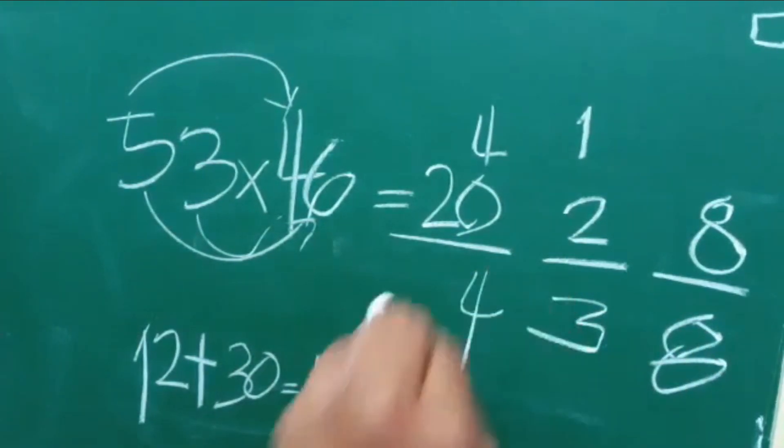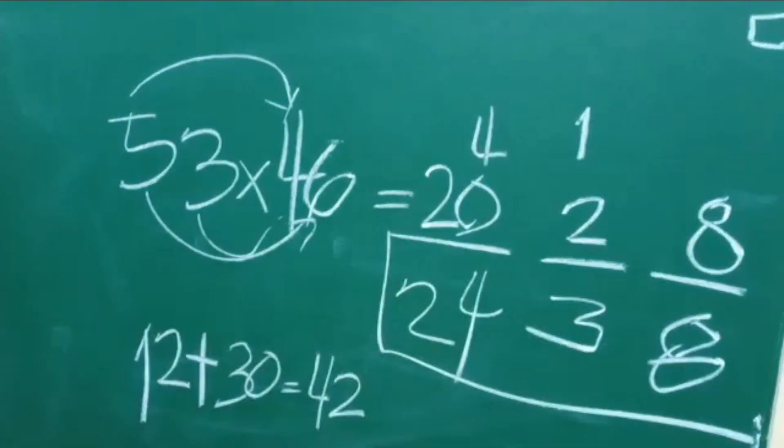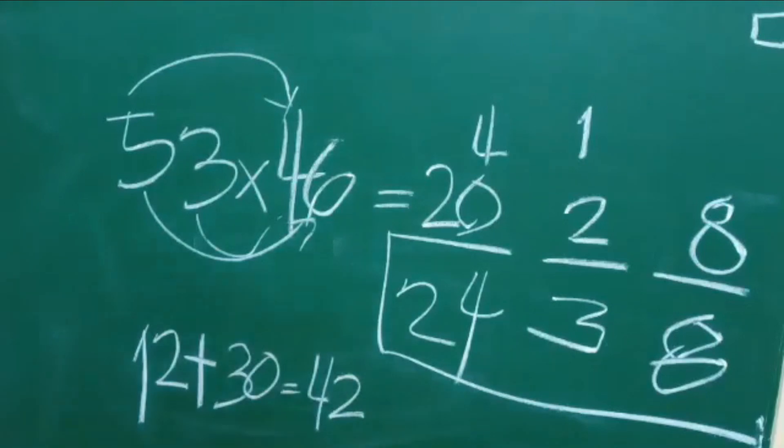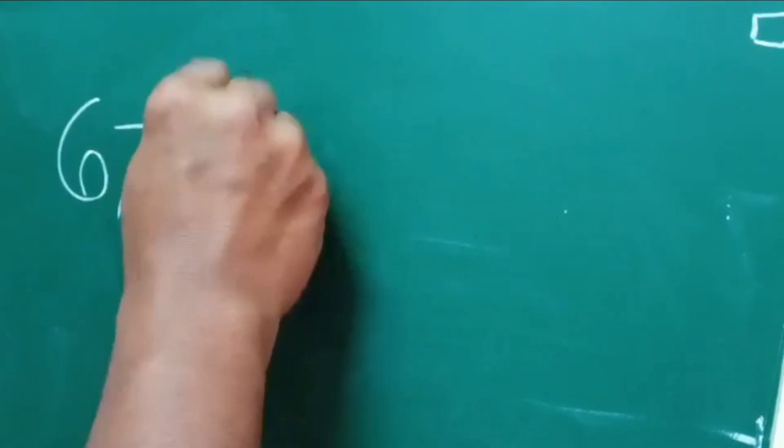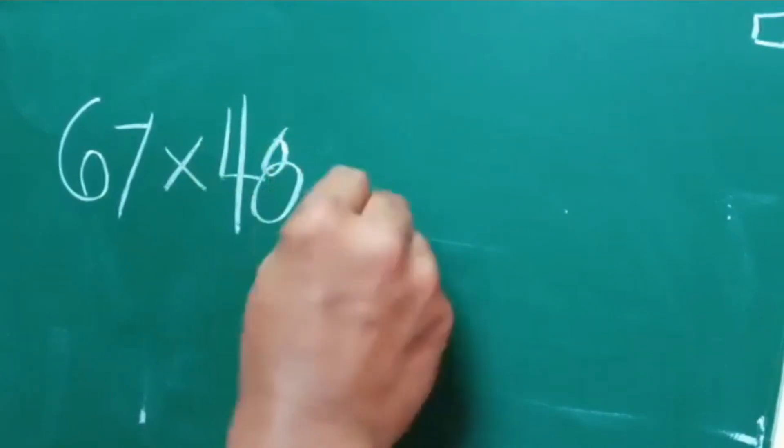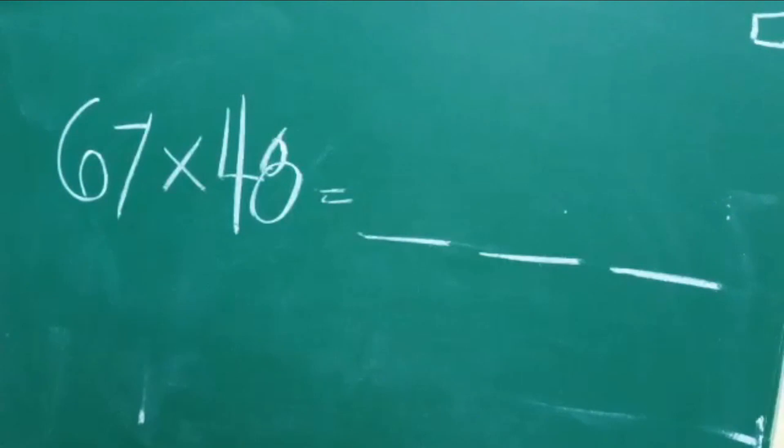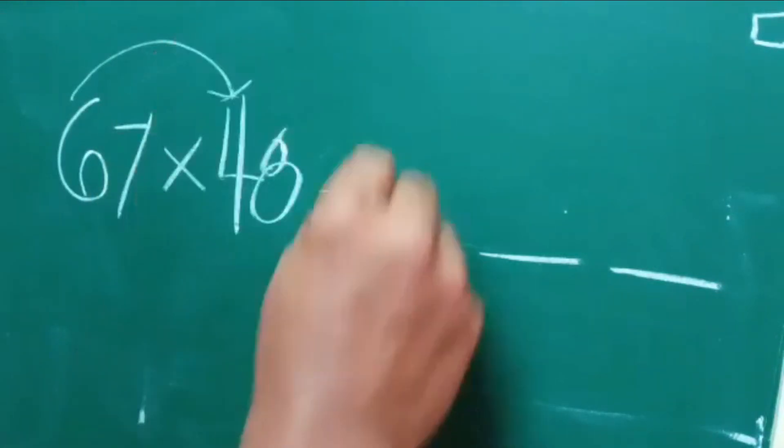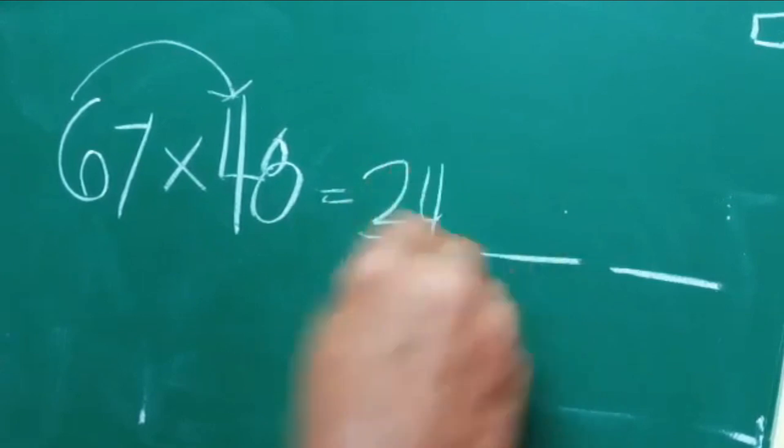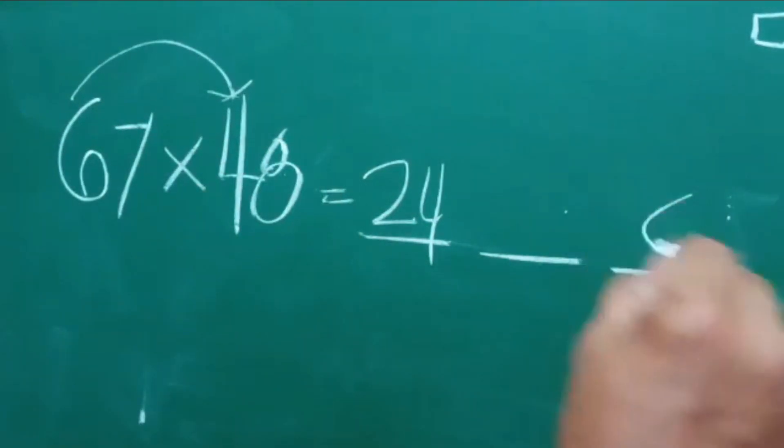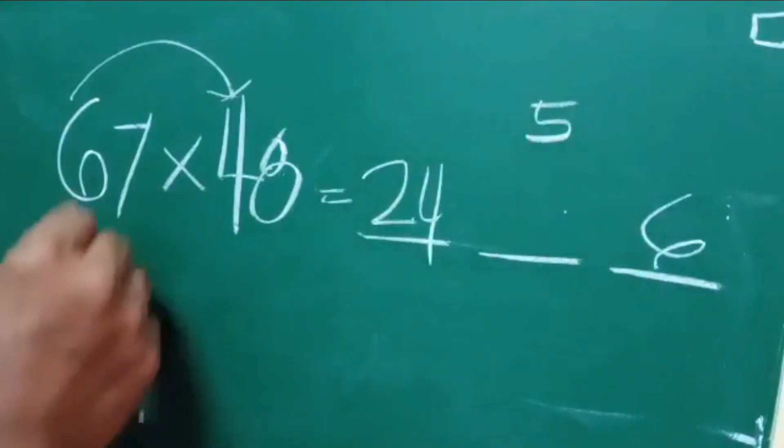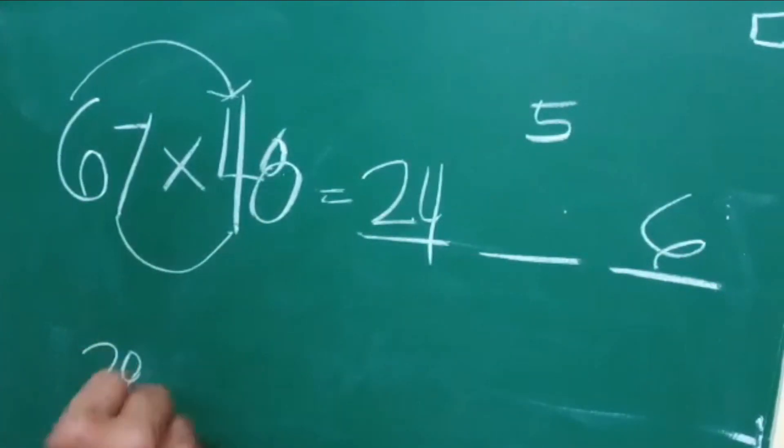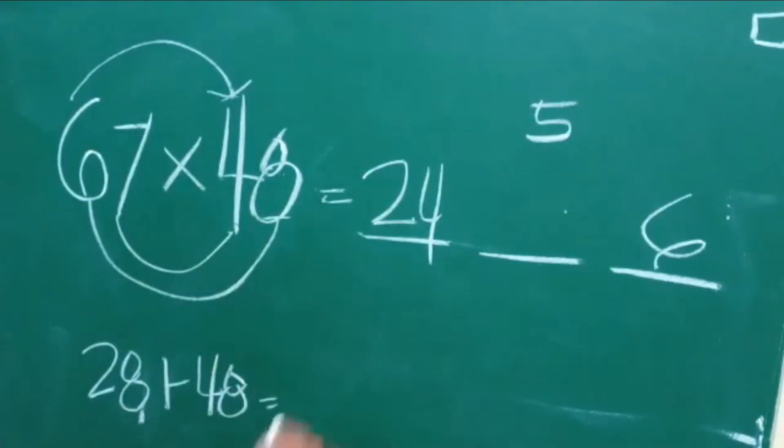So we have to make another number for you which is harder. Let us say 67 multiplied by 48. Applying the same principle, 6 times 4 is equal to 24. 7 times 8 is equal to 56. Now 7 times 4 is equal to 28. 6 times 8 is equal to 48, so the answer is 76.